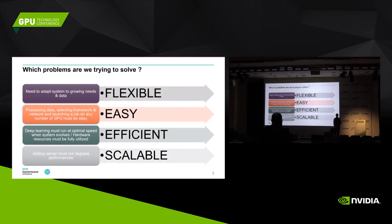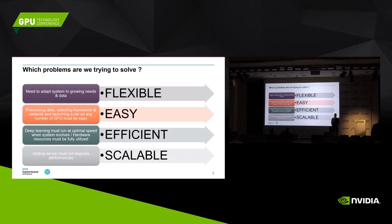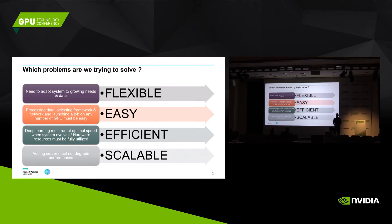The solution we'll be presenting today addresses a few problems. First, not each customer has the same issues or the same cluster or only one workload. So first we want it to be flexible, to be more agile, to adapt what we provide to customers. Some customers will require just a small server with two GPUs, but some others will need four or eight GPU servers that you need to stack. So the first point is how we can be flexible.